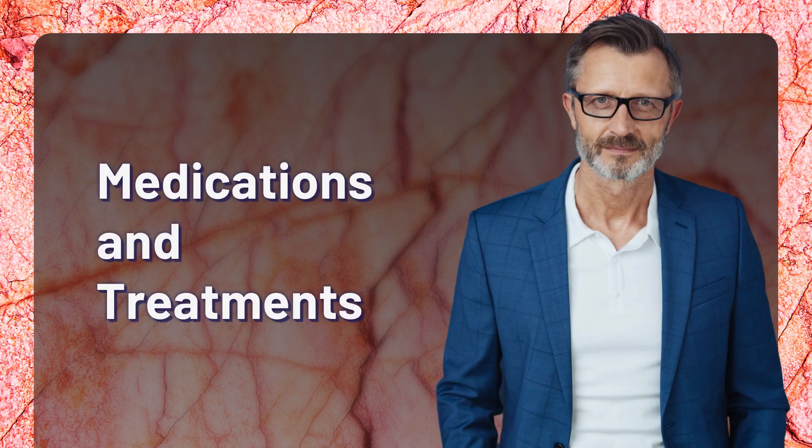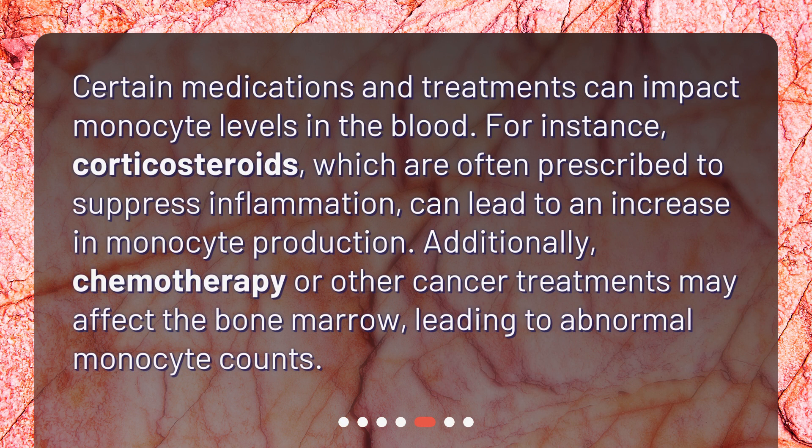Medications and Treatments: Certain medications and treatments can impact monocyte levels in the blood. For instance, corticosteroids, which are often prescribed to suppress inflammation, can lead to an increase in monocyte production. Additionally, chemotherapy or other cancer treatments may affect the bone marrow, leading to abnormal monocyte counts.